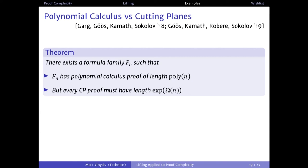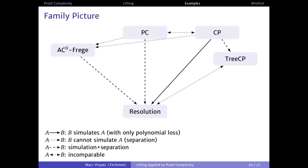Going to the near-present, we can now prove lower bounds for DAG-like cutting planes using lifting theorems. One result is that we can separate polynomial calculus and cutting planes. Using a lifting theorem, you can show there are some formulas where polynomial calculus can prove them efficiently, but cutting planes cannot. So in the proof system picture, polynomial calculus and cutting planes are now known to be incomparable.